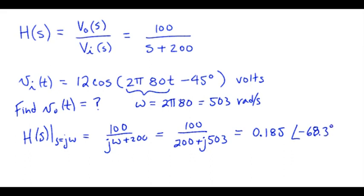So to get the magnitude of the output, we take the product of the input magnitude, 12, times the gain, 0.185, and that gives us 2.22.